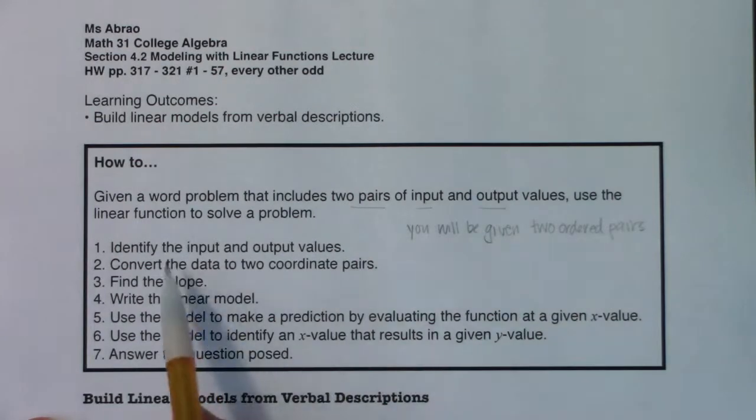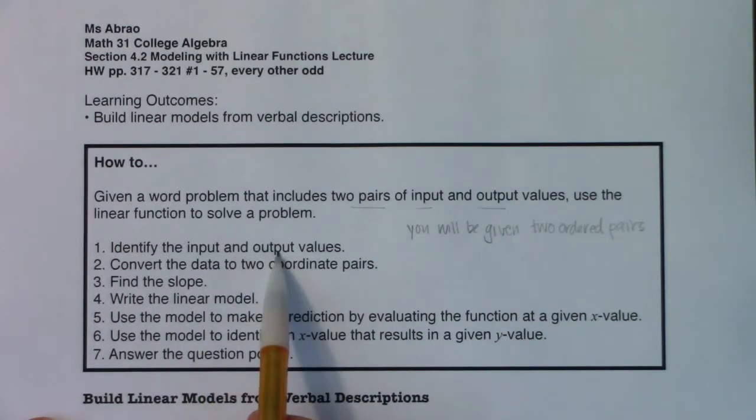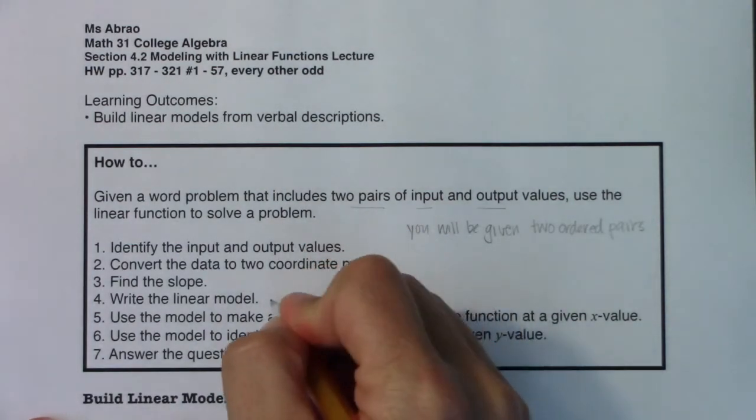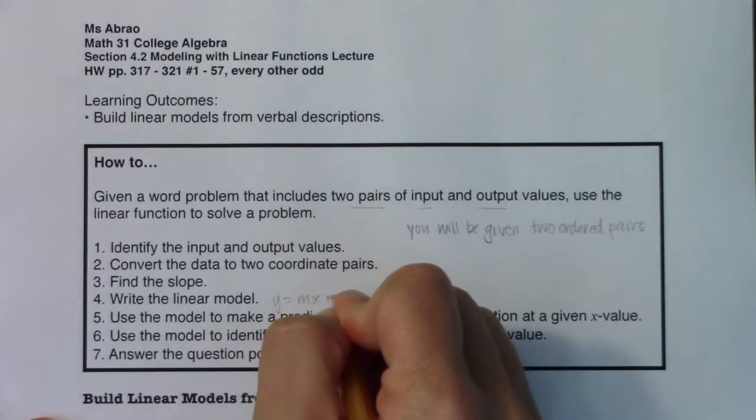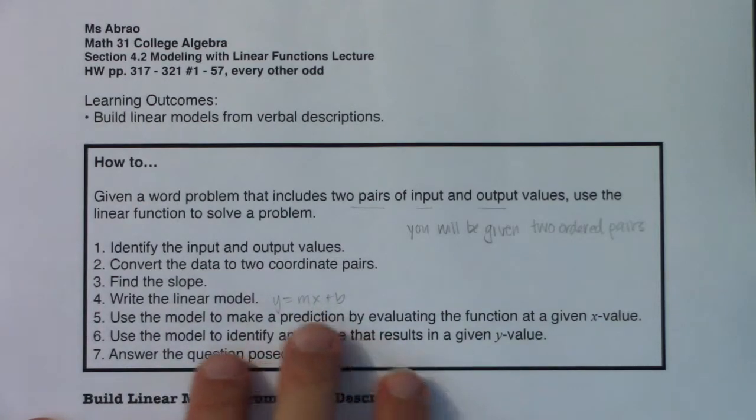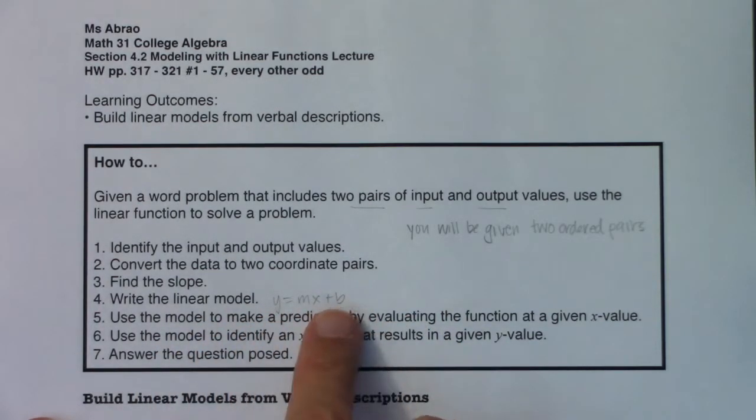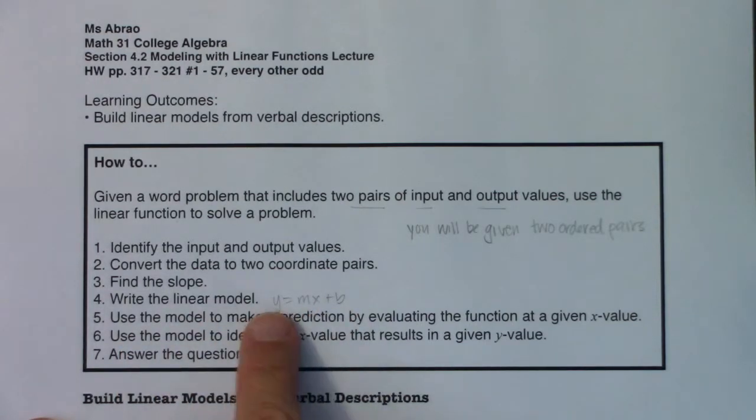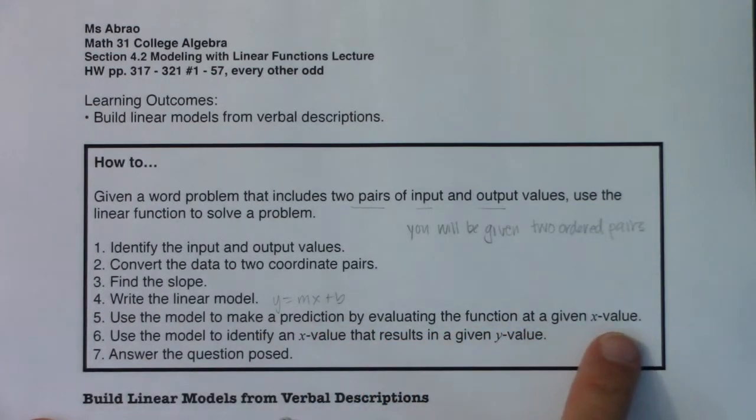So if you're given two ordered pairs, identify those input and output values, convert the data into two coordinate pairs, find the slope between those two points, write your linear model. Again, linear model, this is fancy speak for let's go with mx plus b. That is a linear model. It's the equation of a line. And we'll eventually do quadratic models, and logarithmic models, and exponential models, but we're doing linear models right now. So once we get our model established, we will use that model to make a prediction by evaluating the function at a given x value. Or there will be times when we use that model to identify an x value that results from a given y value. And make sure you always answer the question that was posed to you.